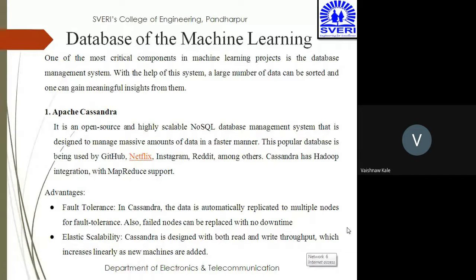So we are going to see 10 ways of doing the management system. The first one is Apache Cassandra — it is an open source and highly scalable NoSQL database management system designed to manage massive amounts of data in a faster manner. This popular database is being used by GitHub, Netflix, Instagram, Reddit, and others.